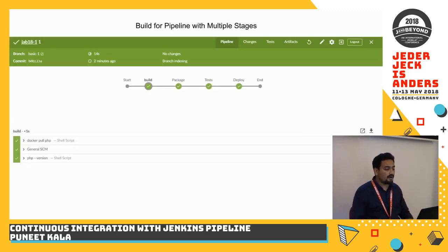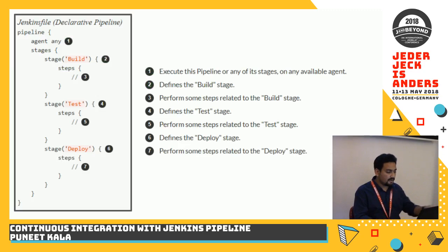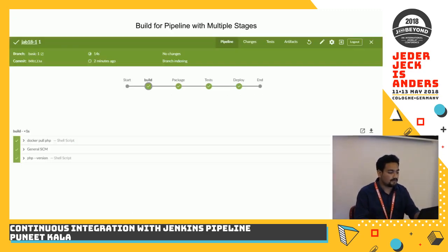This is how a multi-stage pipeline looks, where you have build, package, test, and deploy. That's the example you see here — this is how it would look on Jenkins pipeline.